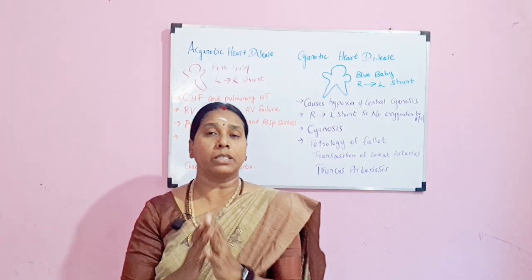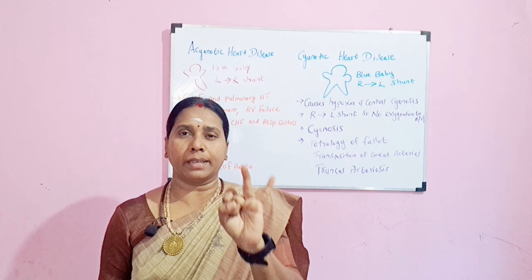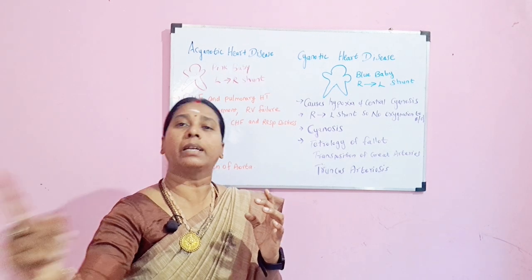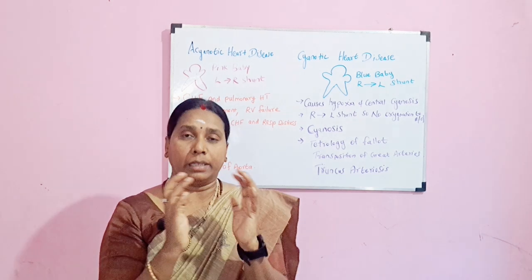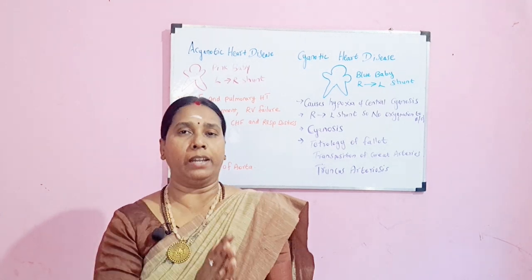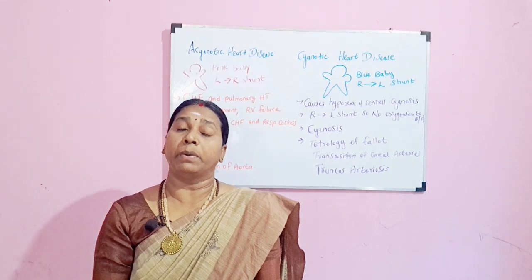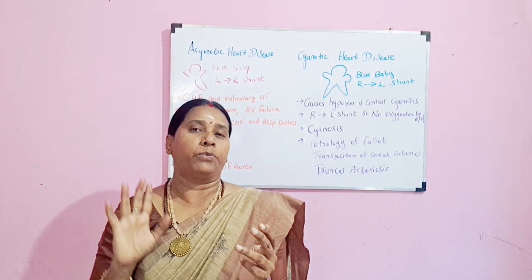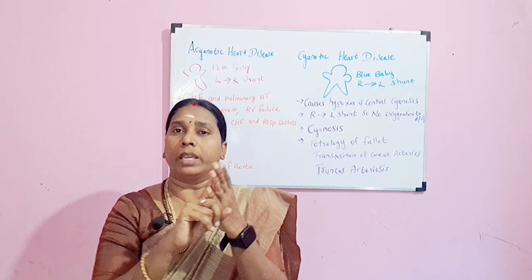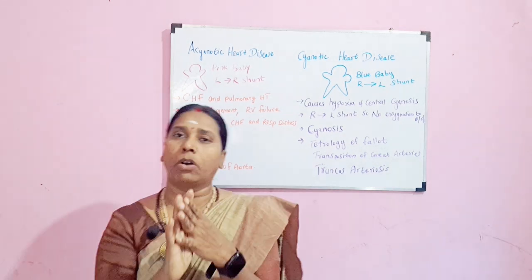To summarize: in acyanotic heart disease, the shunt is from the left side to the right side, so oxygenated blood enters the right ventricle. The right ventricles become overloaded, leading to right ventricular enlargement, hypertrophy, and failure. Too much blood enters the lungs causing severe breathing difficulty and congestive heart failure. The four conditions are patent ductus arteriosus, atrial septal defect, ventricular septal defect, and coarctation of the aorta.